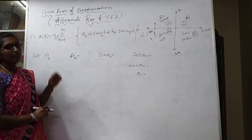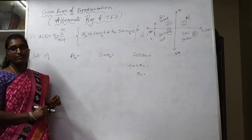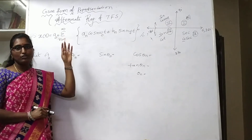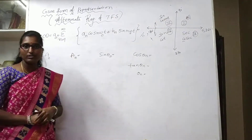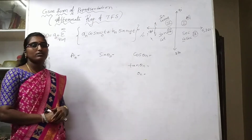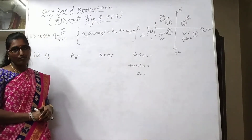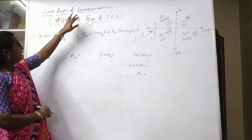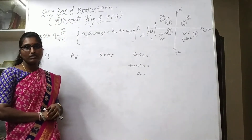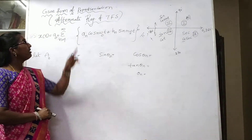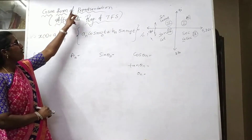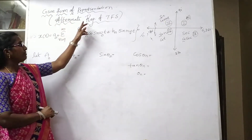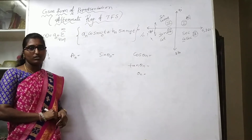Hi everyone, welcome to the next class. In the previous videos we studied about trigonometric Fourier series along with some problems. In this class we will discuss again the trigonometric Fourier series representation in another form — the cosine form — which is an alternative representation of the trigonometric Fourier series.